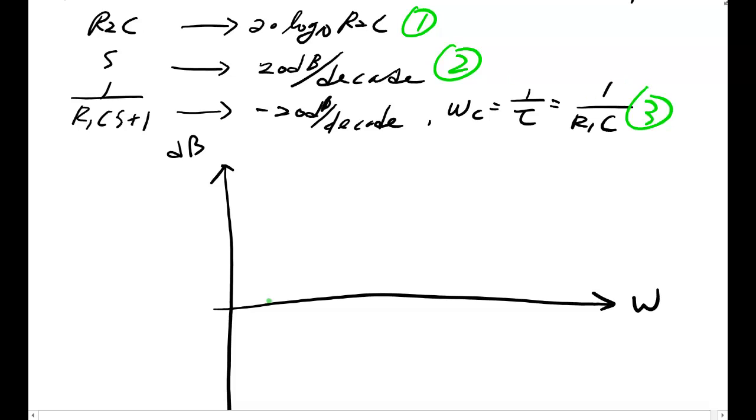So maybe you have one, this is one constant. Two is a positive slope. It's positive 20 dB and of course this point here passing frequency one radian per second.